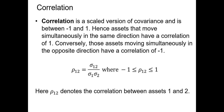Next we have correlation, which can be considered scaled covariance. It represents how random variables move with respect to one another. Correlation ranges from negative 1 to positive 1, with positive 1 indicating perfectly positive correlation and negative 1 indicating perfectly negative correlation. Coefficients of zero indicate independence between the two random variables. If we know the covariance, we can divide it by the standard deviations of the two random variables to calculate our correlation coefficient.